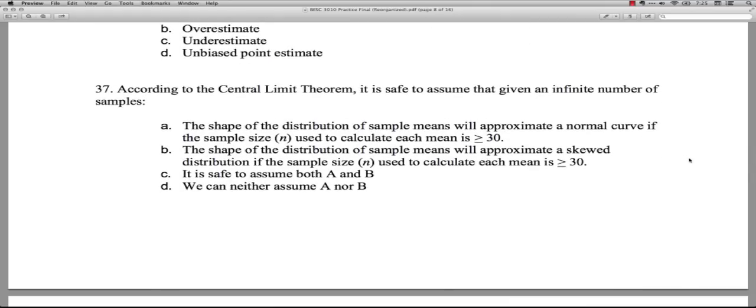Question 37: According to the central limit theorem, it is safe to assume that given an infinite number of samples, let's see here, the shape of the distribution of sample means will approximate a normal curve if the sample size used to calculate each mean is greater than or equal to 30. Yes, that is correct. A is the correct answer. If your sample sizes are 30 or more, then almost no matter what the original population for the raw scores, the sampling distribution, which is what you're making here, will be a normal distribution. That's one of the things that the central limit theorem says. They'll be skewed? No, that's not true. You can start with skewed, you'll end up with a normal distribution. It is safe to assume both A and B - those are contradictory. The answer is A, 37A.